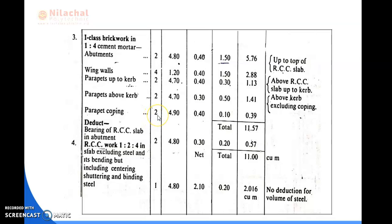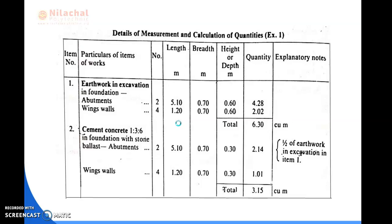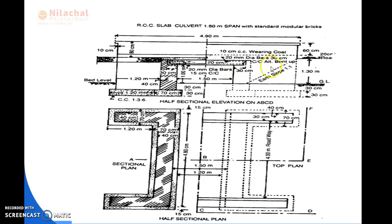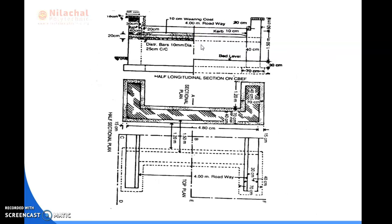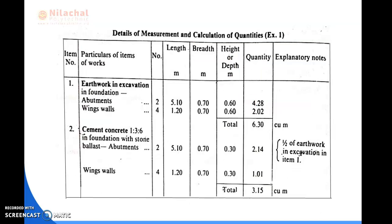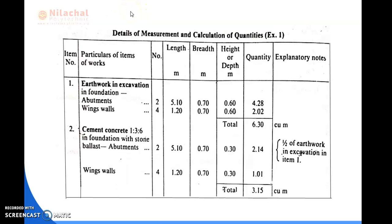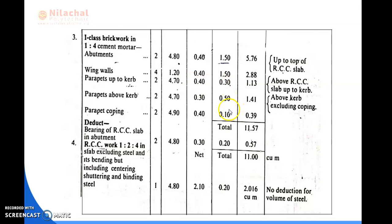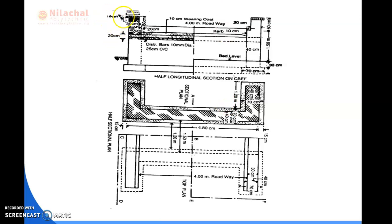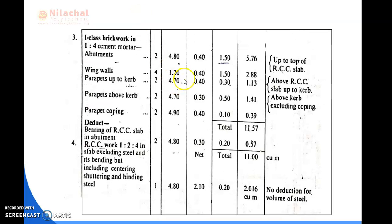We are going to the parapet coping. Parapet is two numbers, so coping is also two numbers. The length of the coping is 4.90, as given from the half sectional elevation. The breadth of the coping, found from the longitudinal sectional elevation, is 40 cm. The thickness of the coping is 10 cm. We define the quantity using: number × length × breadth × thickness. Then we define the total quantity. Thank you. The next part will be discussed in the next lesson.